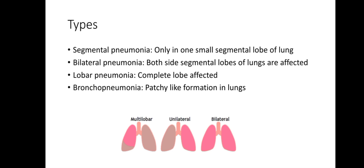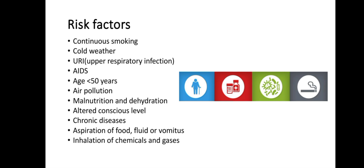Types of pneumonia include: segmental pneumonia, where only one small segmental lobe of the lung is affected; bilateral pneumonia, where both sides' segmental lobes are affected; lobar pneumonia, where a complete lobe is affected; and bronchopneumonia, which shows patchy formations in the lungs.